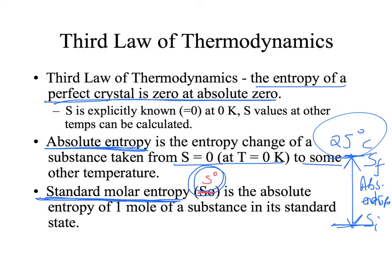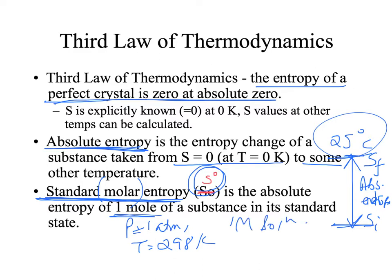Standard molar entropy is the entropy for one mole of a substance in its standard state. Standard state refers to a pressure of 1 atm, temperature of 298 Kelvin, and for solutions, a 1 molar concentration. When measuring the absolute entropy for one mole of a substance, we refer to it as S°, where the superscript zero indicates measurement at standard state.